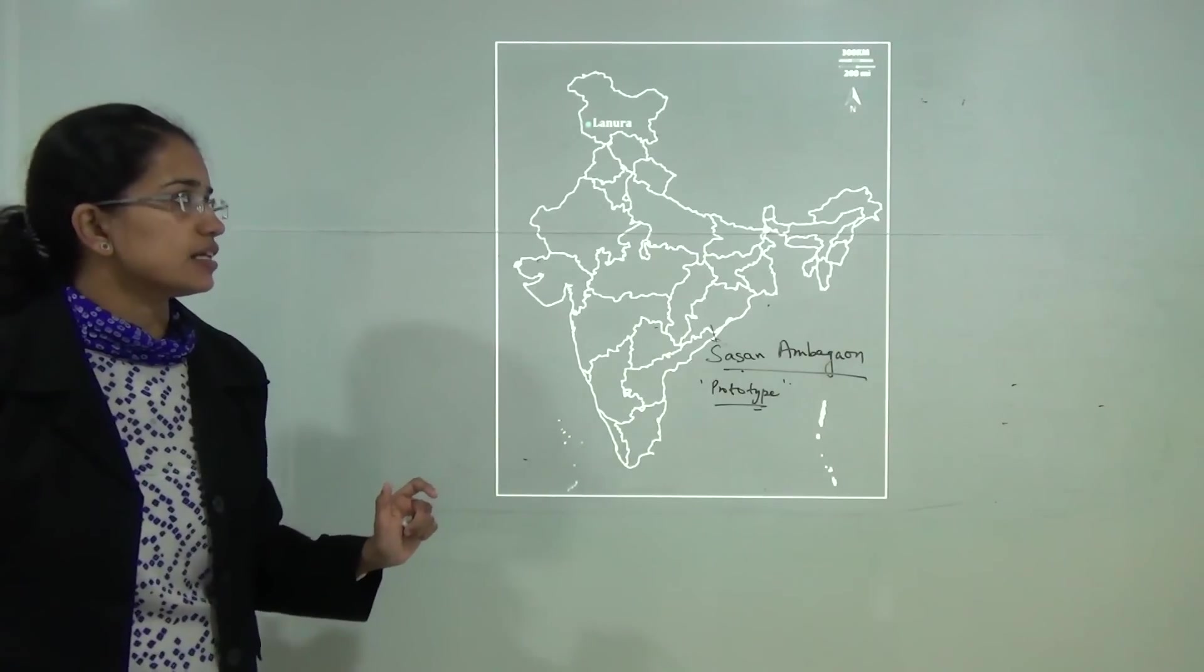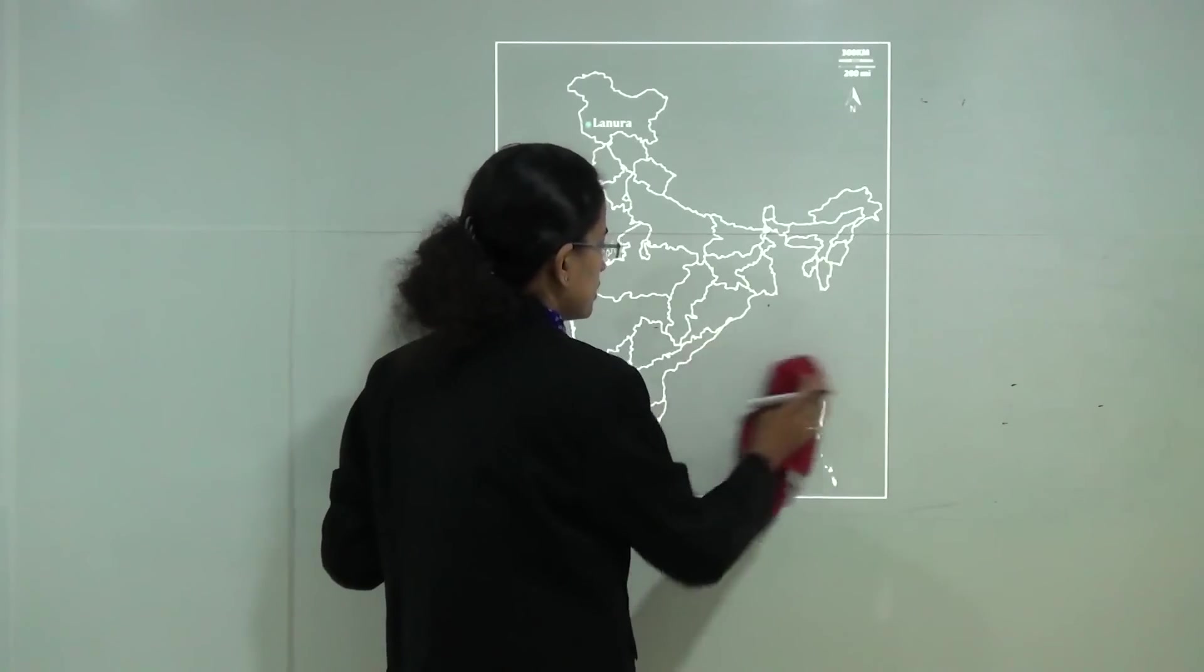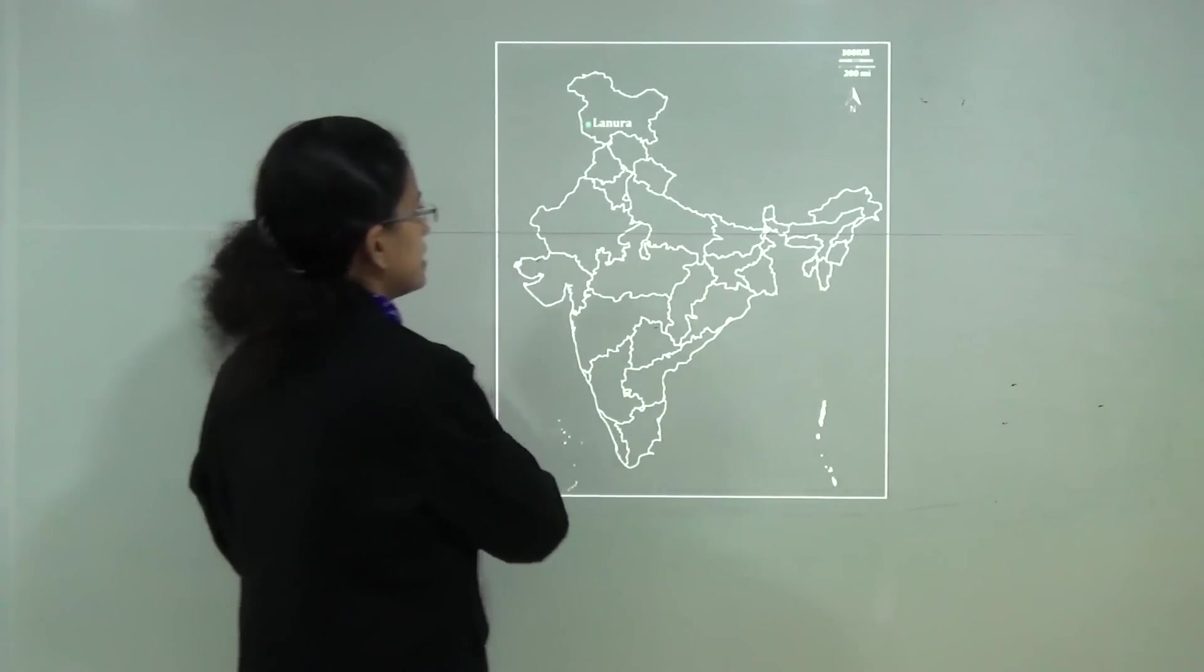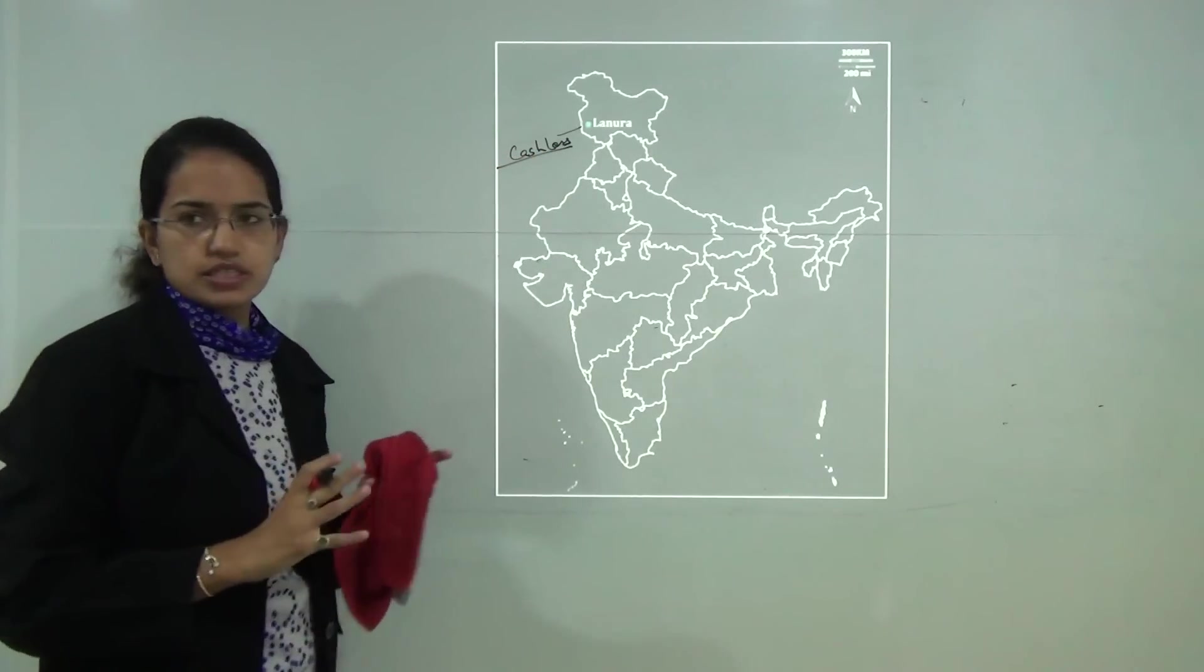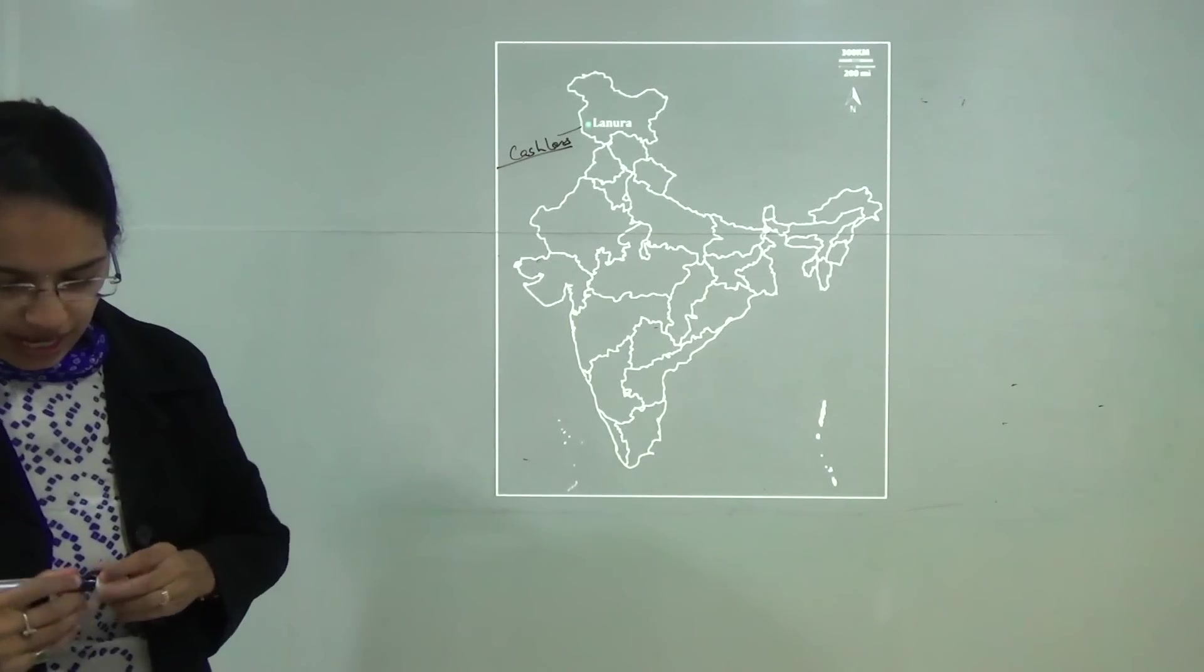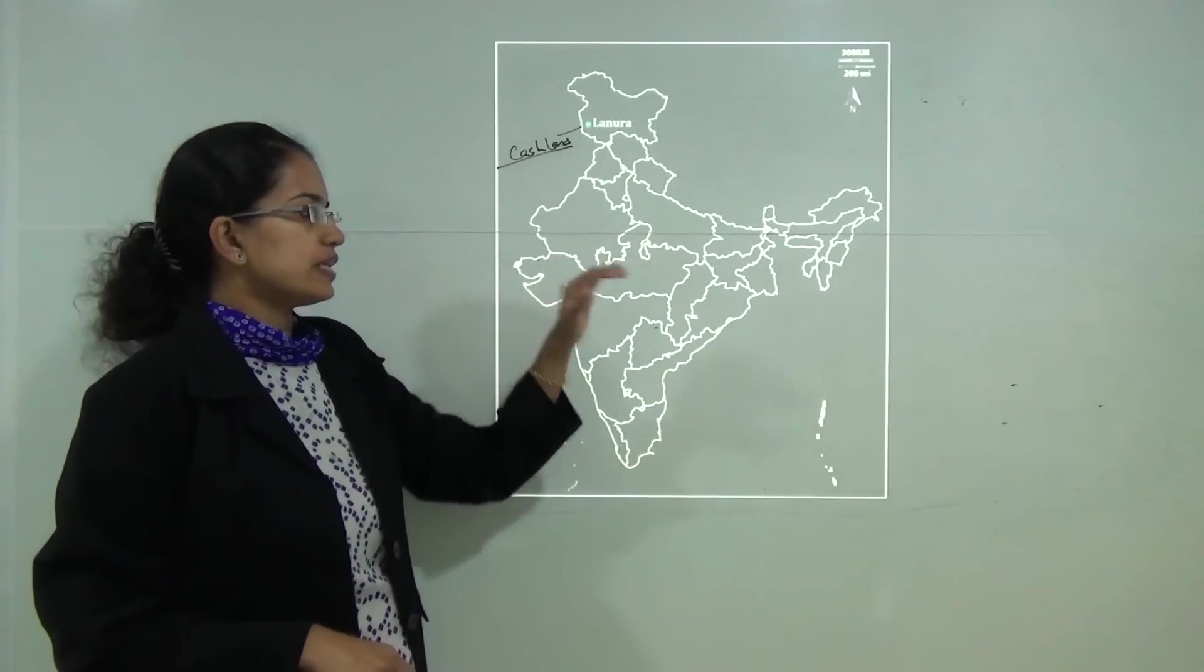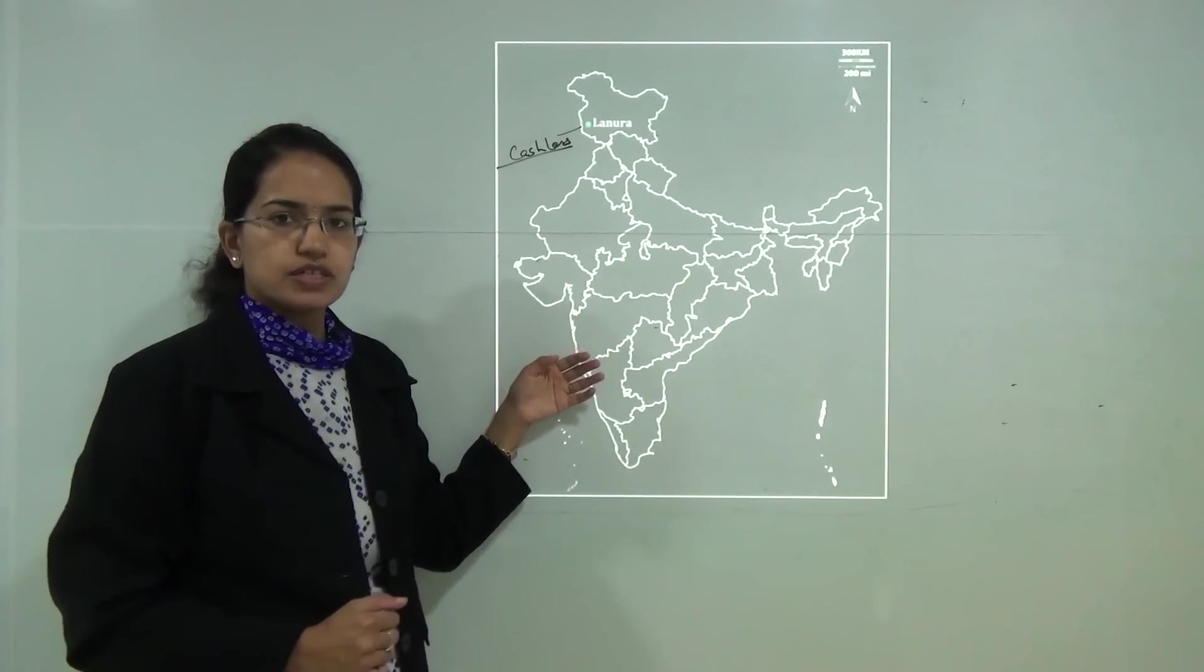The next is Lanura. Lanura lies in Jammu and Kashmir and it's the first of its kind to go cashless. All the economy in Lanura is now cashless through digital payments and e-payments and it lies in Badgam district in Jammu and Kashmir. With this we cover all the 20 contemporary locations for the first class.